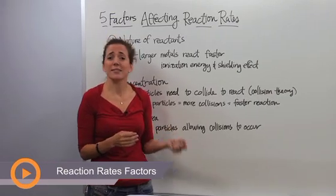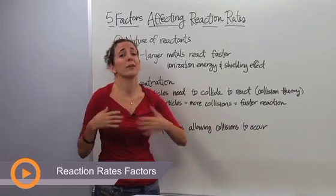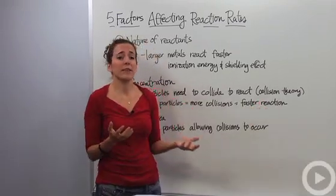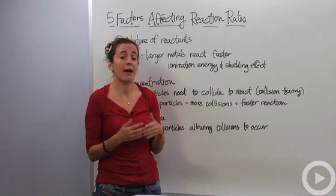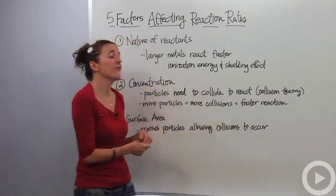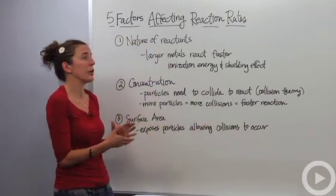All right, so we can have reactions that happen instantly, and we can have reactions that happen over millions and millions of years. So what is it that affects the actual reaction rate, how fast the reaction can go? Well, there are five main things that are going to affect how fast the reaction is going to be able to go.